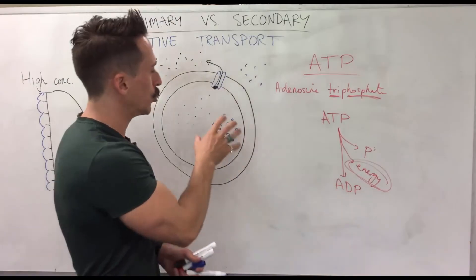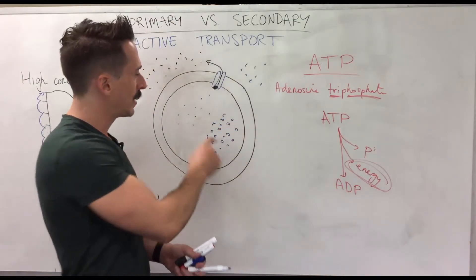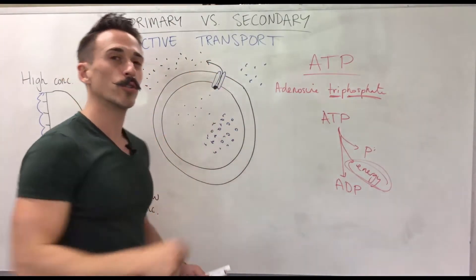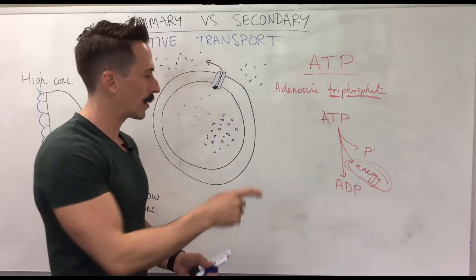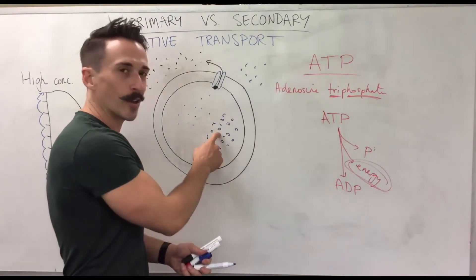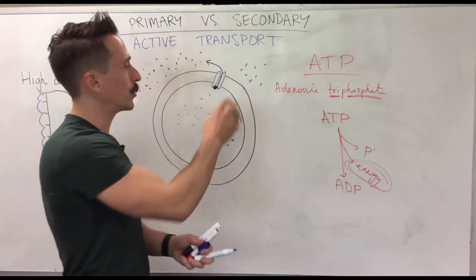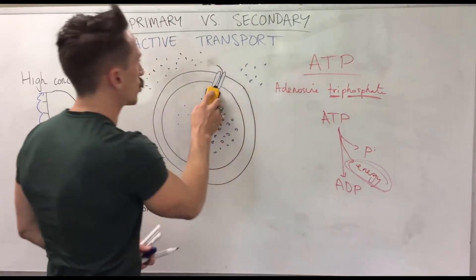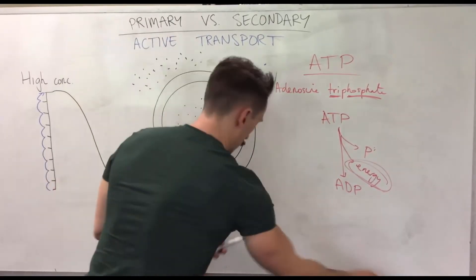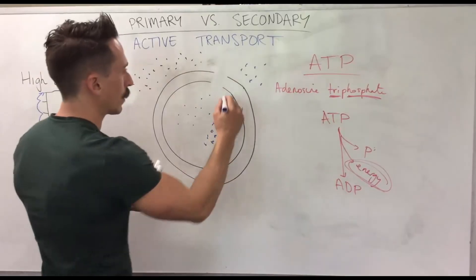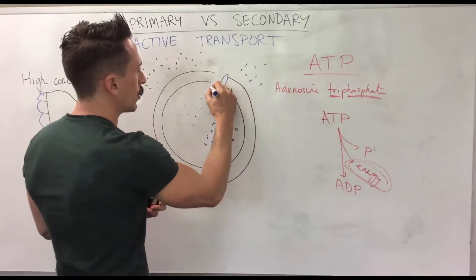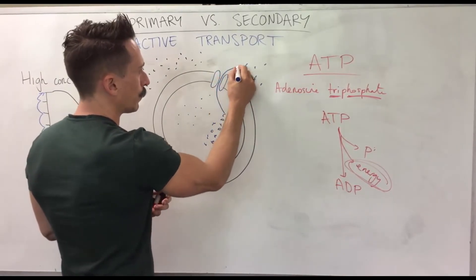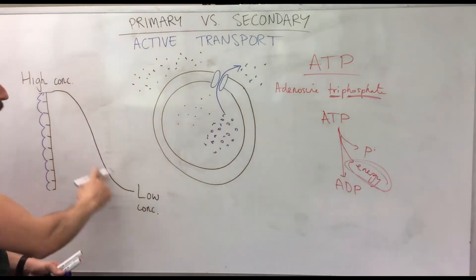What you can do is: the solute that wants to go against its concentration gradient can piggyback on the solute that's going down its concentration gradient. As this solute moves down its concentration gradient through the channel, going down the slide...